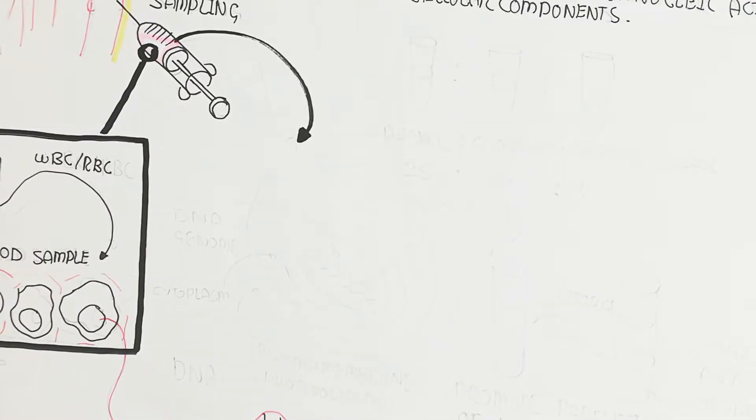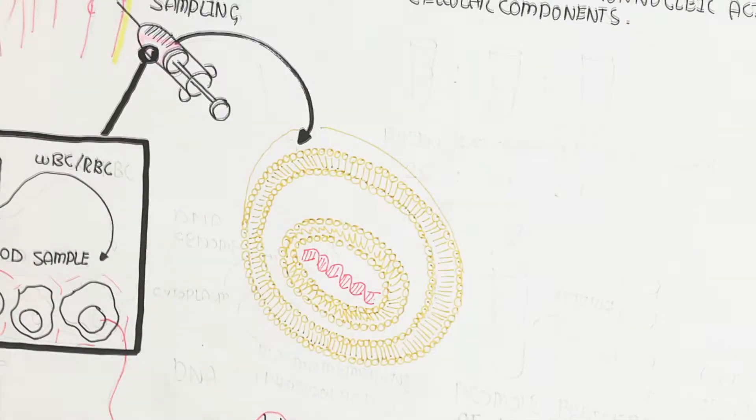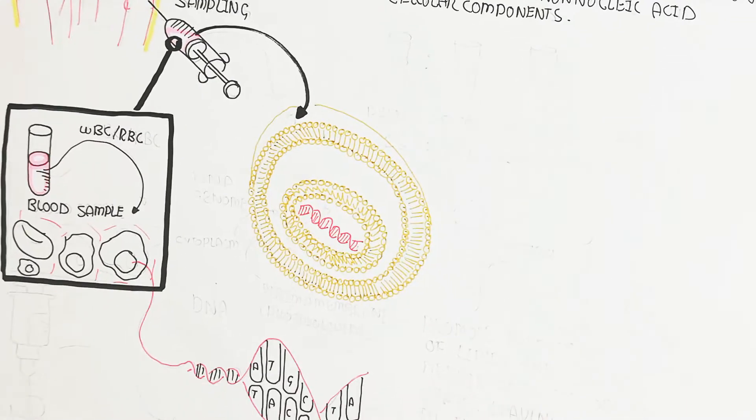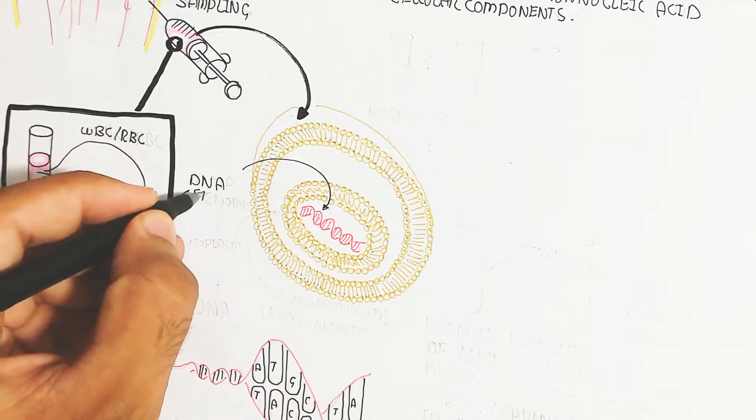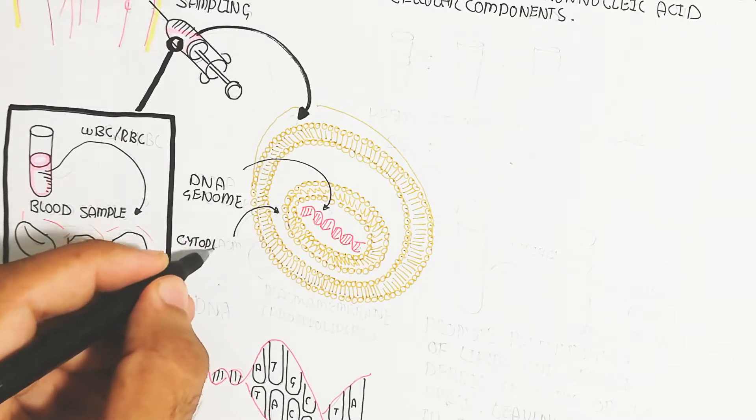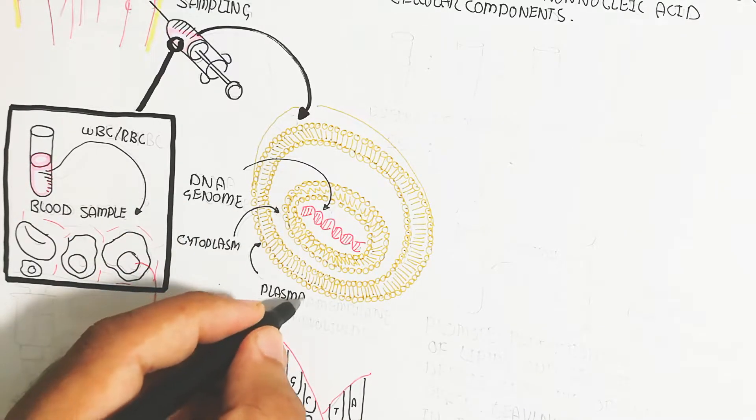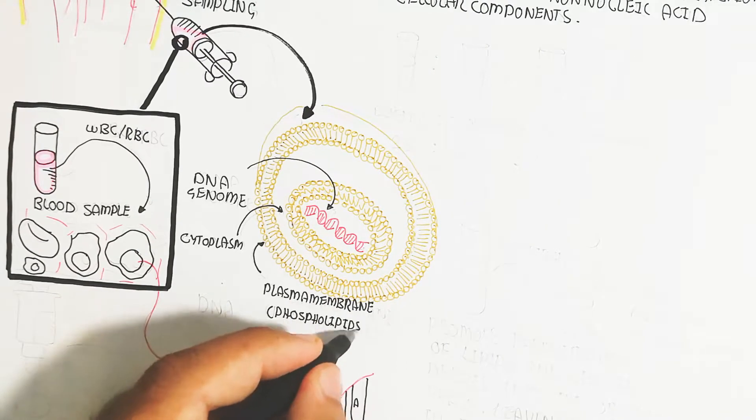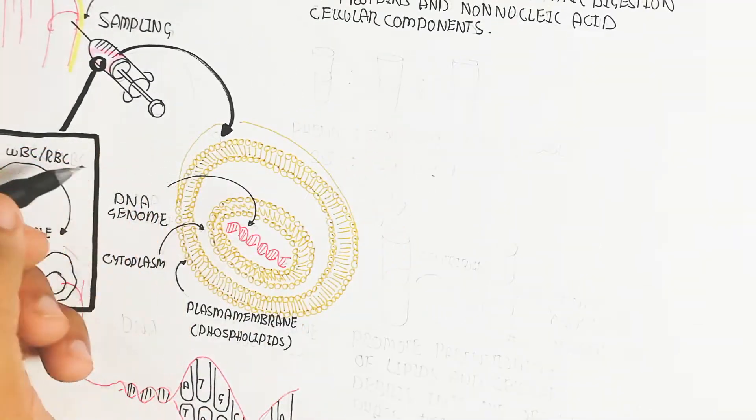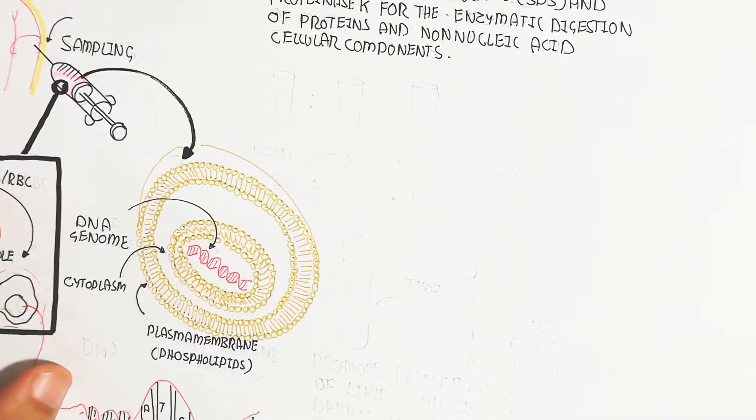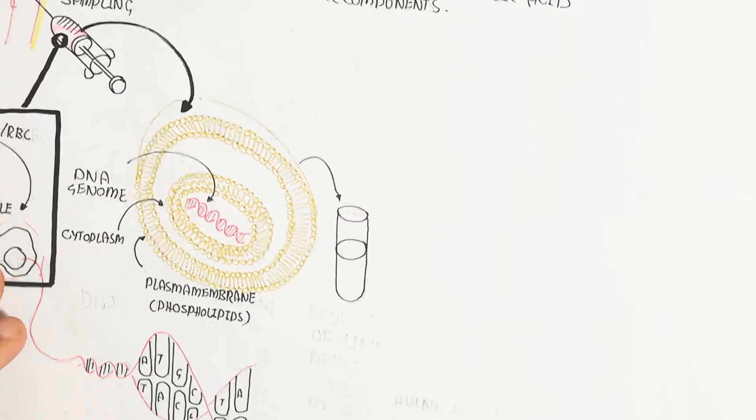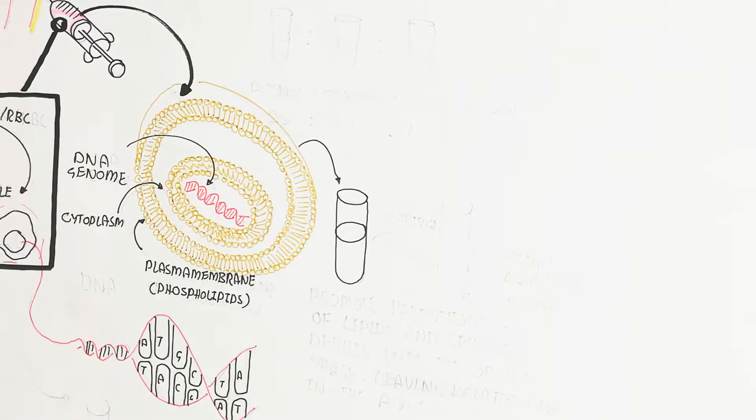The sampling contains cells - B cells and T cells or other immune cells. This is the DNA containing genome in the nucleus, with cytoplasm and the plasma membrane which contains phospholipid bilayer.